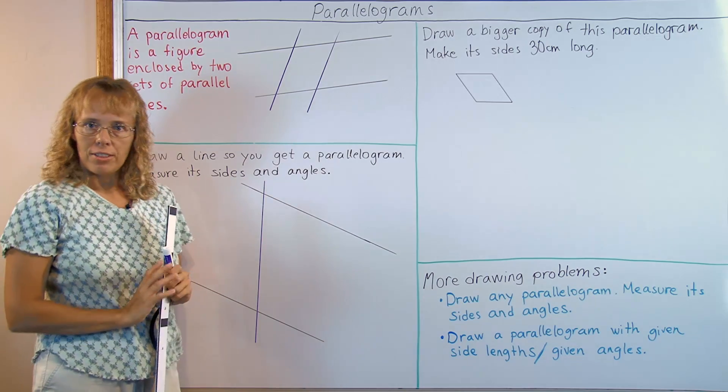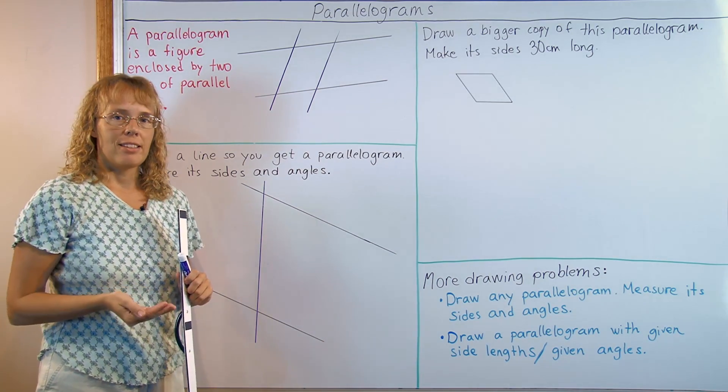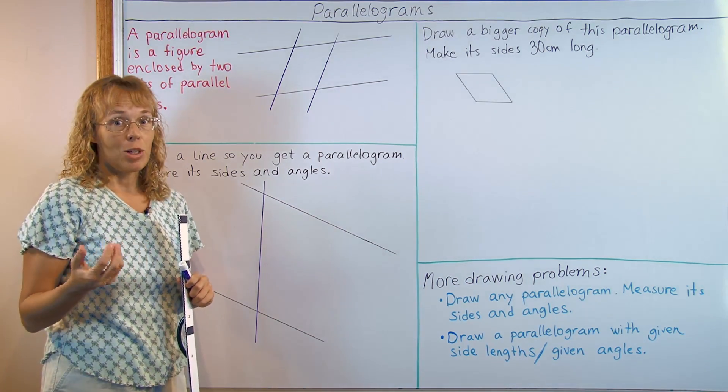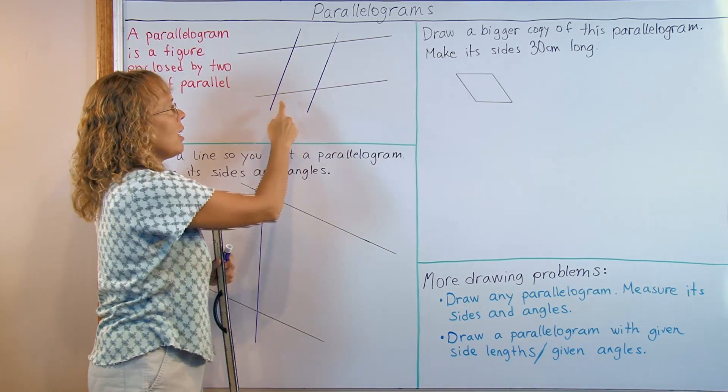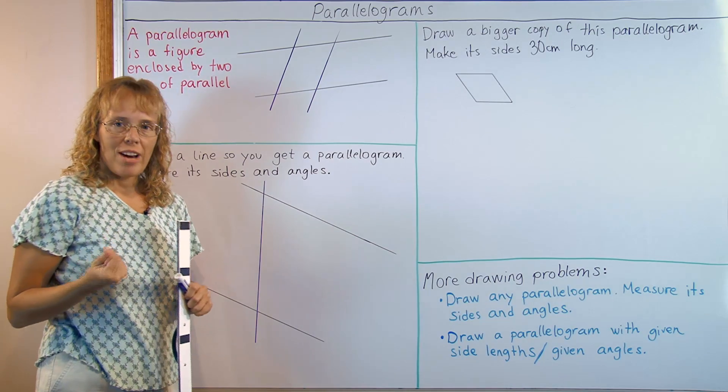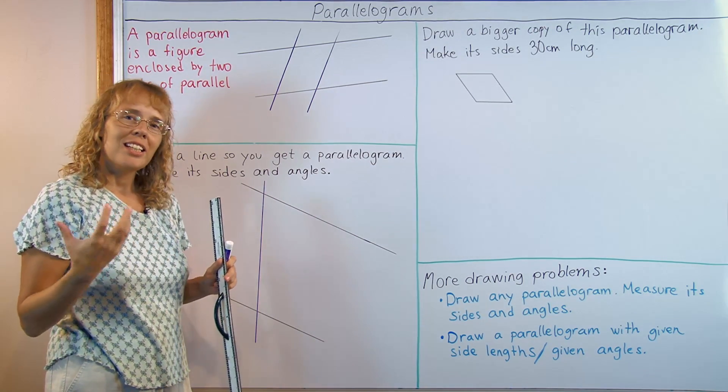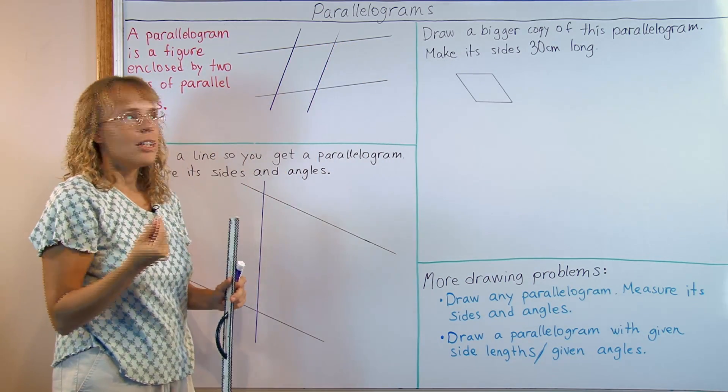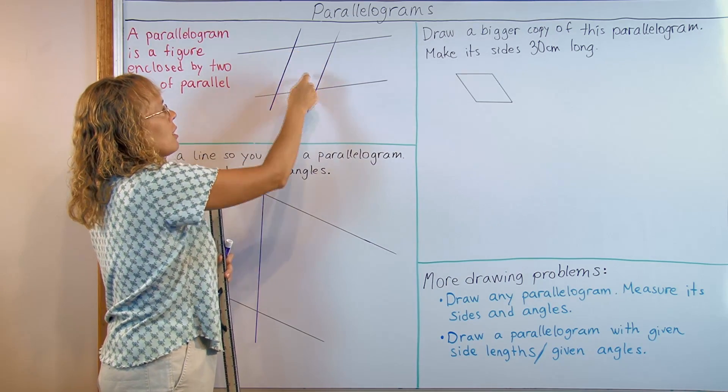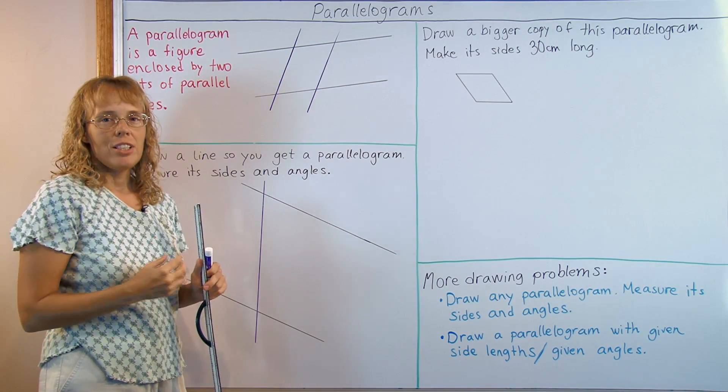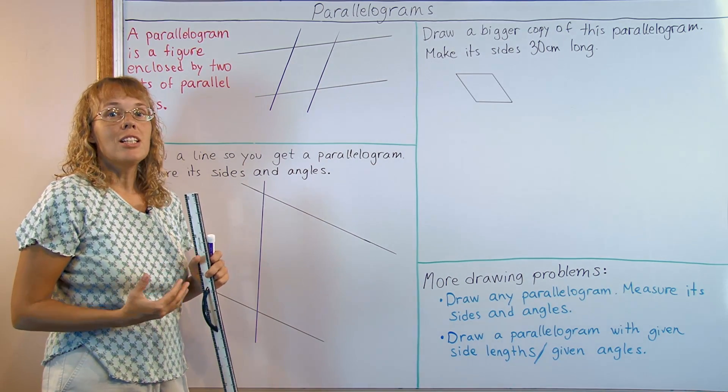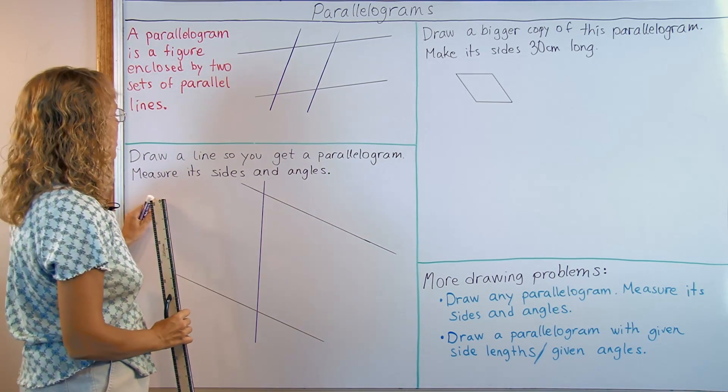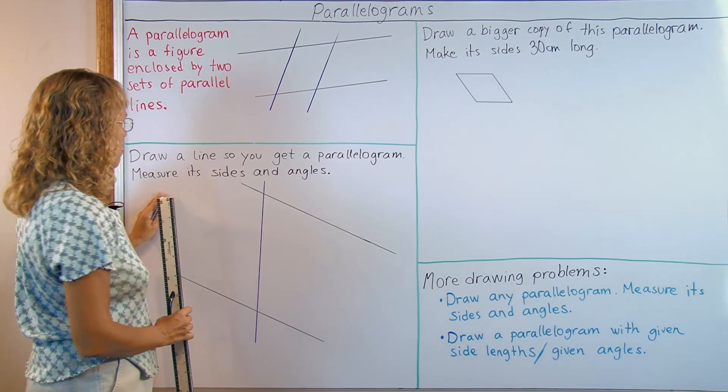And notice that the definition does not say anything about its side lengths nor about its angles. I want to let students discover something about the sides of the parallelogram and the angle measures. Usually you can easily guess that these side lengths here are equal and these side lengths are equal, you can easily guess that the angle measures are equal here and equal here. But they are not part of the definition, so students can actually discover those facts for themselves by drawing and measuring. So you get the parallelogram and then measure its sides and angles.